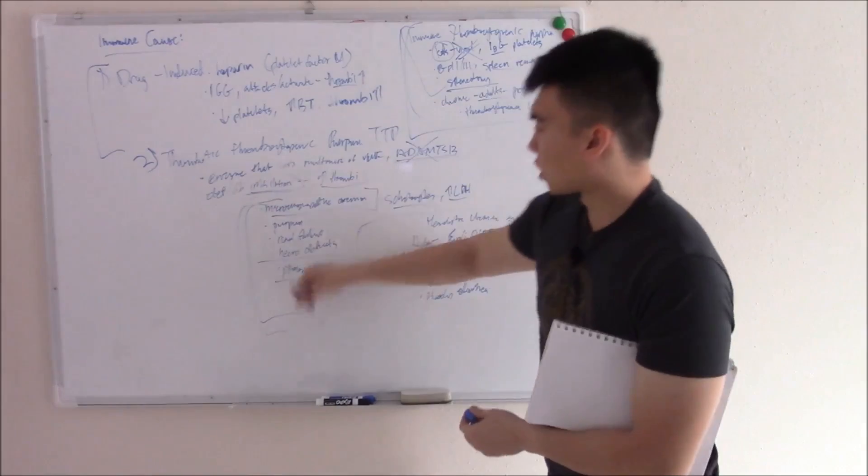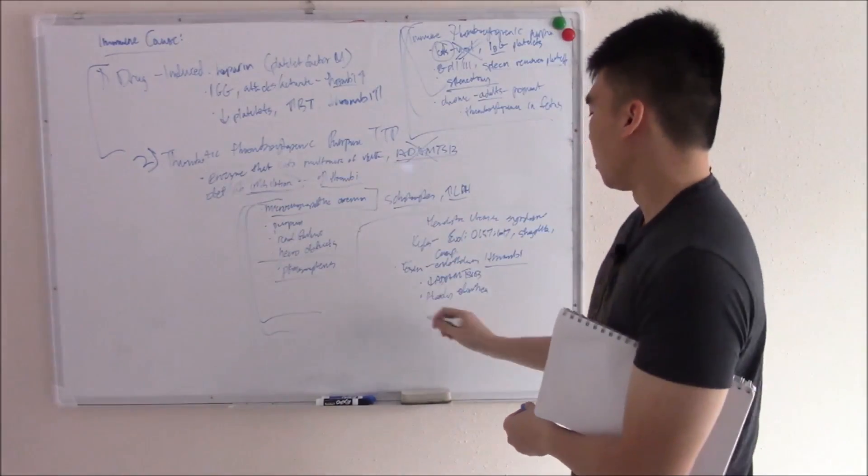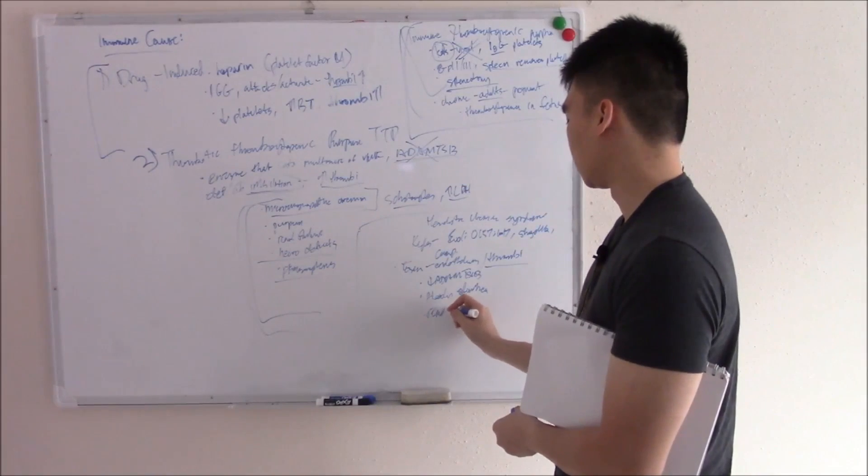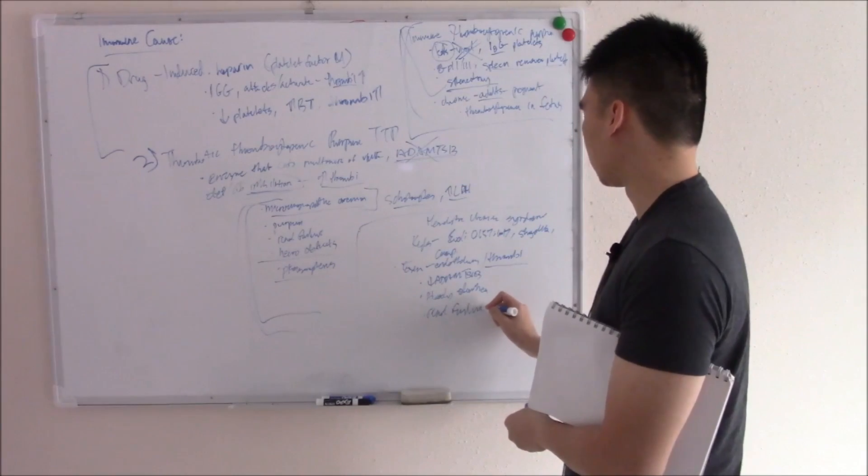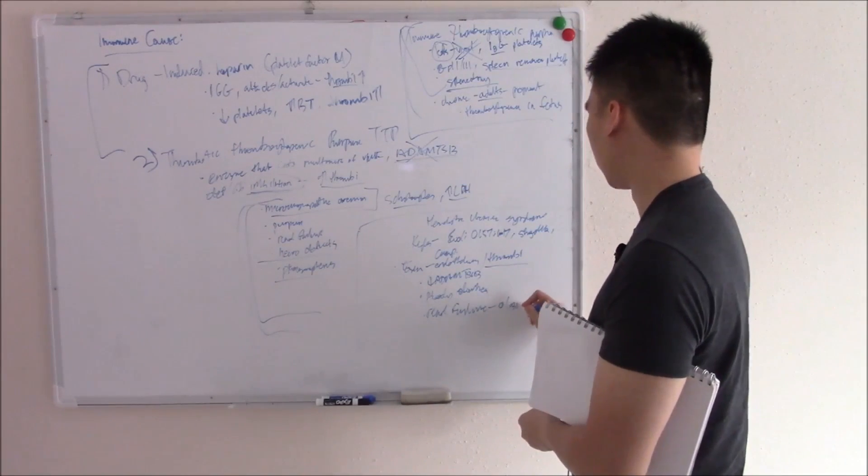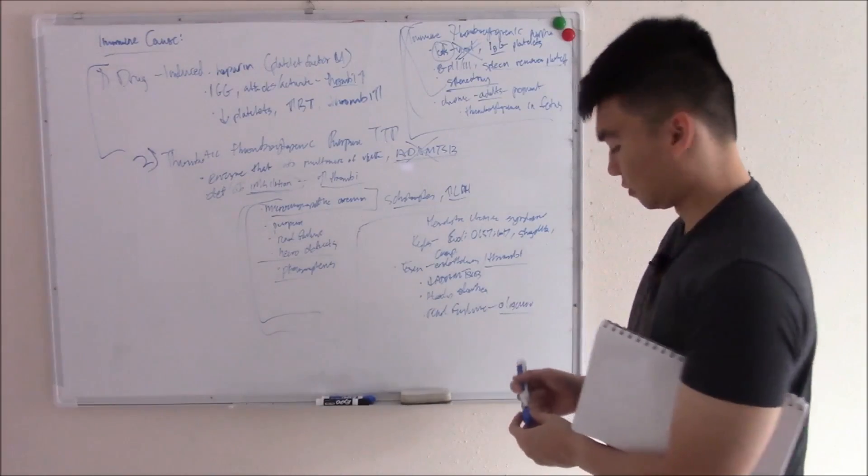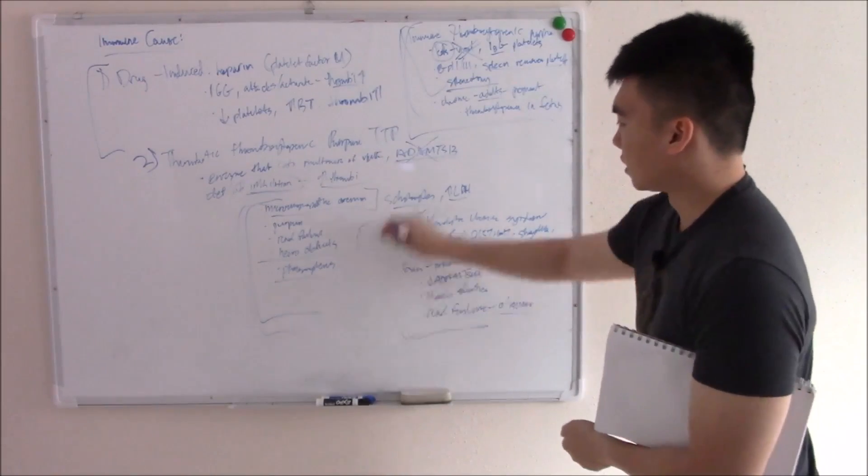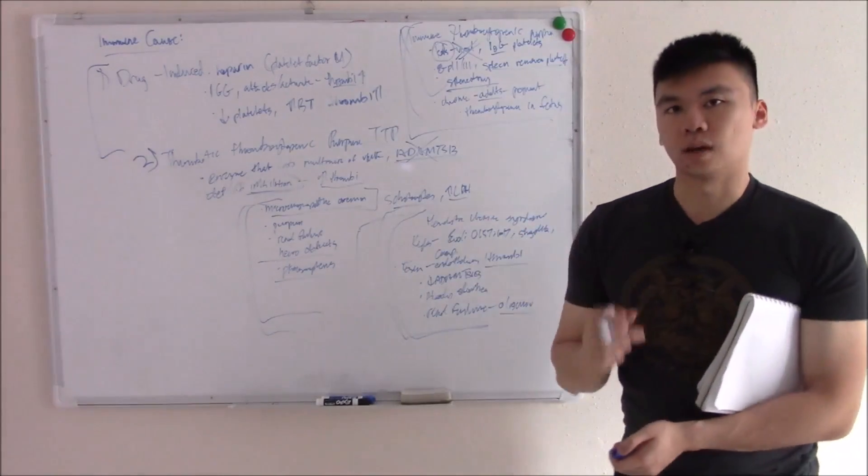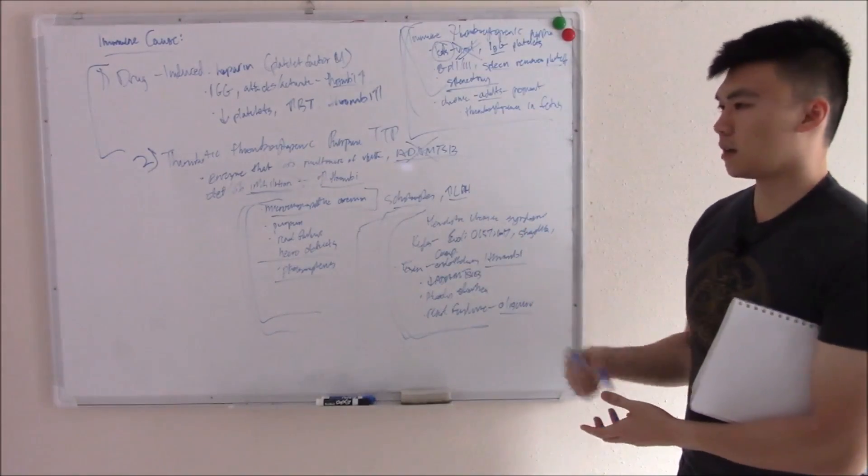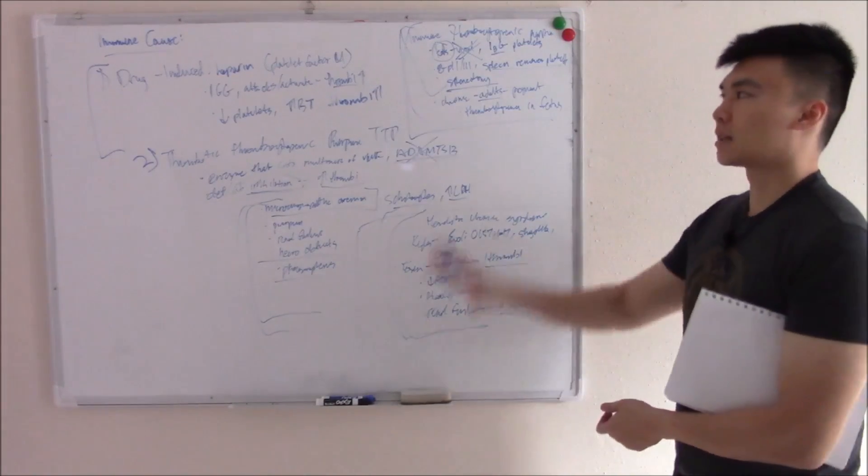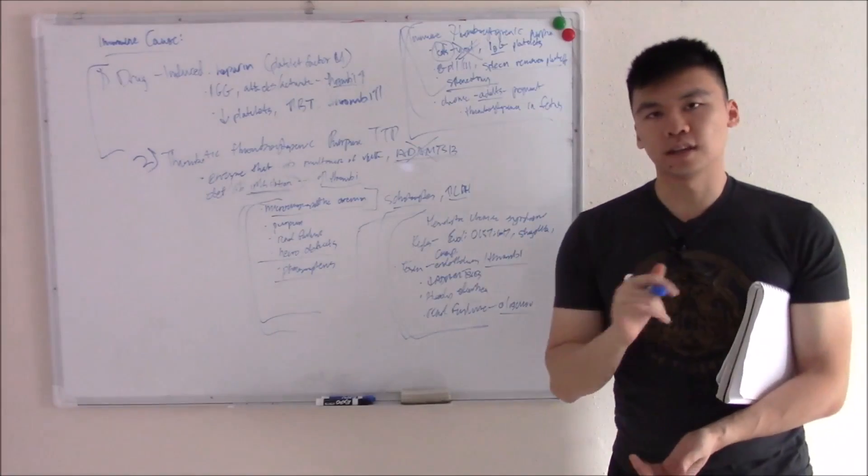And like I said, you're going to get all of these symptoms, microangiopathic anemia, purpura, renal failure. But the big one is going to be renal failure. Acute renal failure, you're going to have oliguria, basically not enough urine because your kidneys are shot. And it's quite common, so you need to be able to pick it up well. Treatment is usually supportive or plasmapheresis. That does it for your platelet disorders. Hope you enjoyed the video. See you next time.